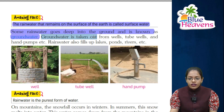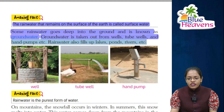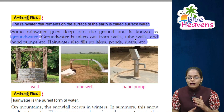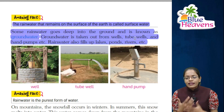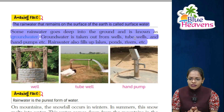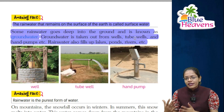Ground water is taken out from wells, tube wells, and hand pumps. Rain water also fills up lakes, ponds, rivers, etc. Children, how do we get water out of the ground? Through wells, tube wells, and hand pumps. Rain water fills up ponds, rivers, and lakes.